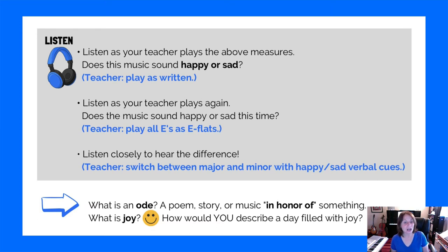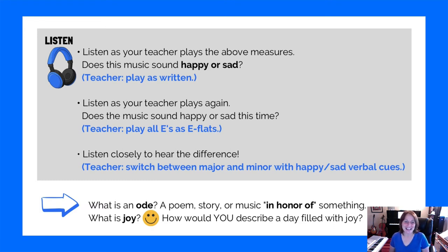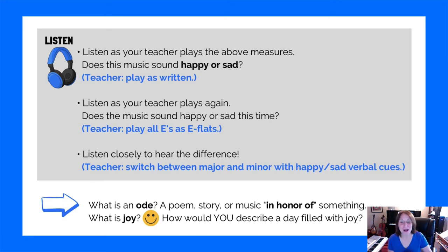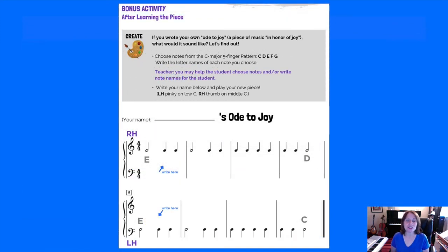And then finally, on the little arrow it asks: what is an ode? That's a poem or music that is in honor of something. And what is joy? Let's ask six-year-olds — ice cream! How would you describe a day filled with joy? Apparently mine starts with a pint of Ben and Jerry's.